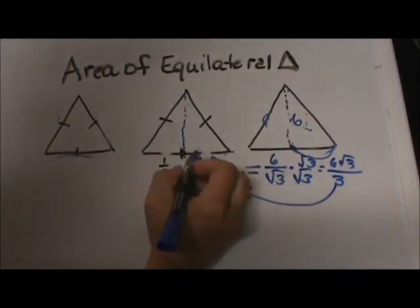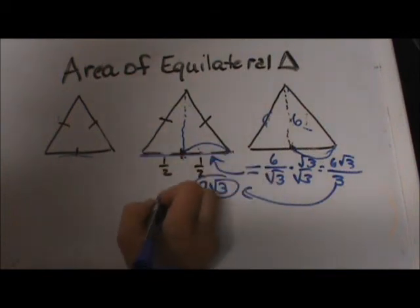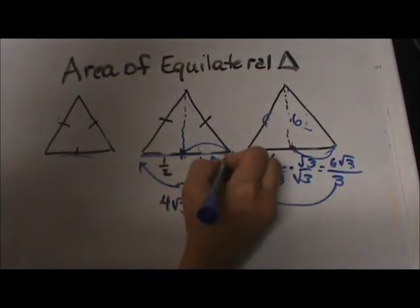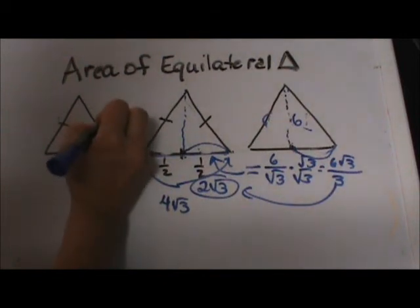Now that is this length right here, but I need to double it to get the length of the side. So I am going to take that times 2, which is 4 square root of 3, and that gives me the length of this whole side. So that means these 3 sides are all 4 square root of 3.